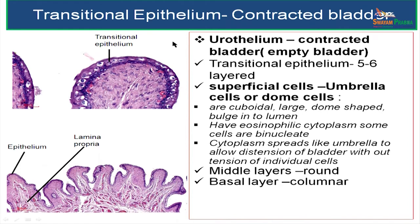We will look at some of the features of the transitional epithelium in an empty or contracted bladder. Transitional epithelium is 5 to 6 layers thick. The superficial cells are called umbrella cells or dome-shaped cells.